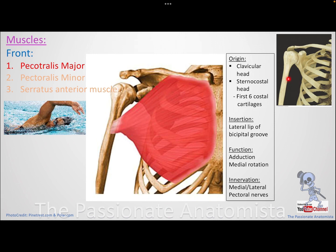It can also cause flexion, but mainly adduction and internal rotation. To remember this, think of the freestyle swimming stroke — the first phase is made by the pectoralis major, and the second phase by the latissimus dorsi. In that first phase, the swimmer is internally rotating and adducting the shoulder — you can also say flexion.